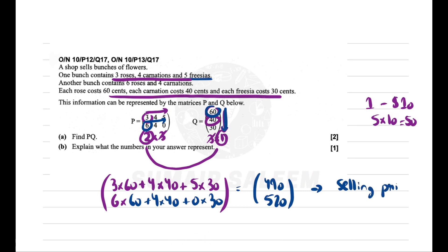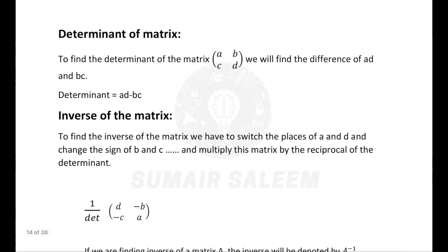I hope you are clear with word problems. Now let's move to determinant and inverse. The determinant formula is AD minus BC. This is A, this is B, this is C, and this is D. The examiner will tell you to write determinant of A.